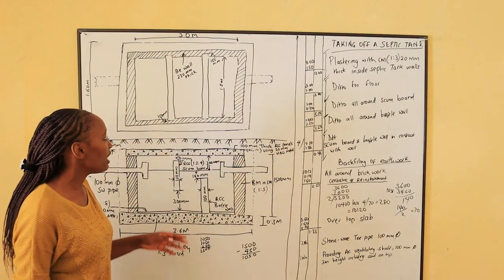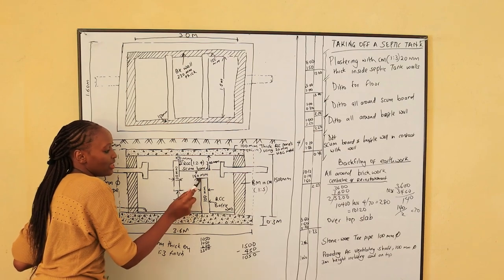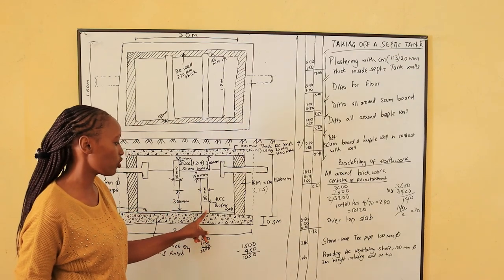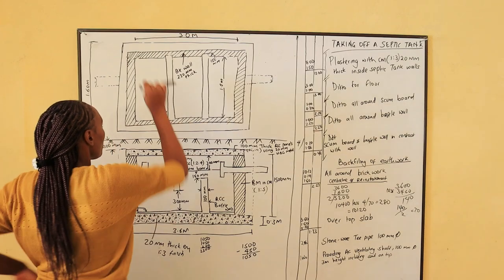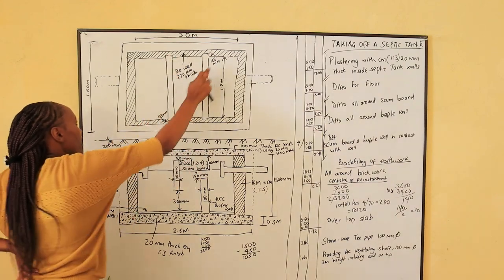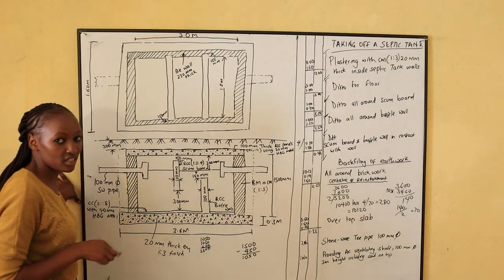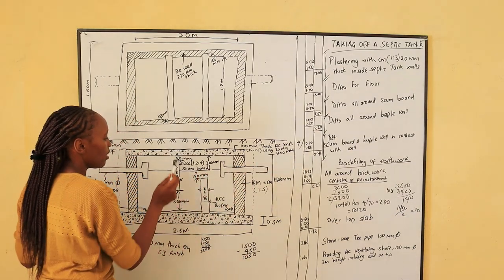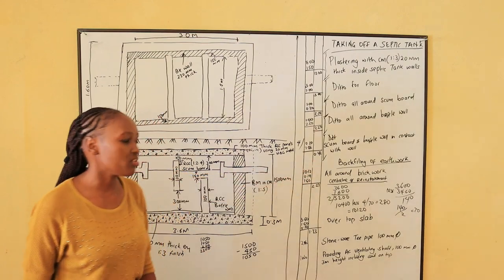Then we go to the baffle wall. The baffle wall length is 1 meter. All around the baffle wall: the height is 1050, and the thickness is 100. Unlike the scum board, the perimeter for the baffle wall is 2300 minus 100, because at the bottom we don't need plaster — so it shall be 2.2m. Now that we have done plastering all around, there is this area of the wall that has been replaced by the buffer wall and scum board — 4 sections with thickness of 100mm. The thickness is 0.1m and the depth is 1.05m, so the total area to deduct is 0.42 square meters.